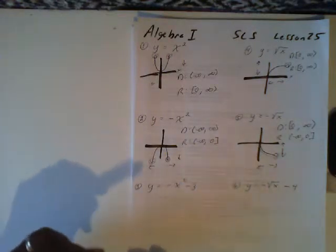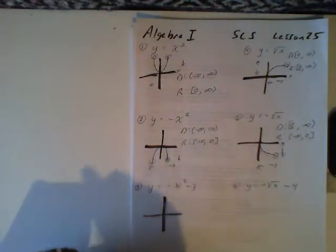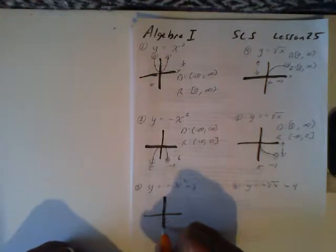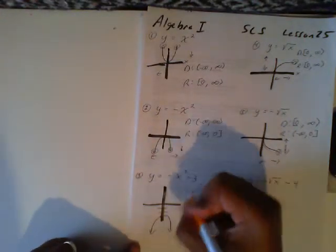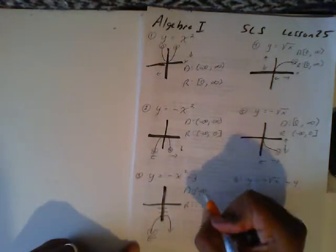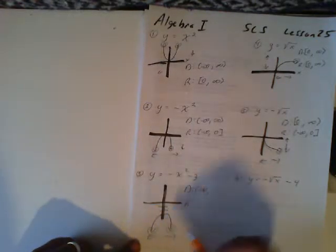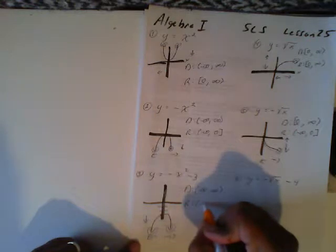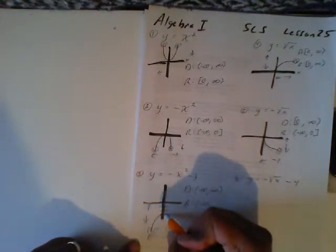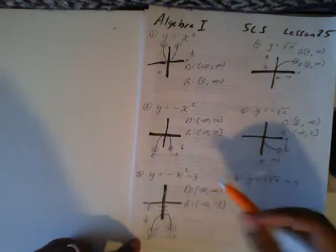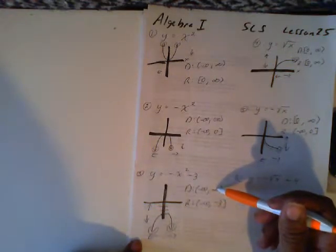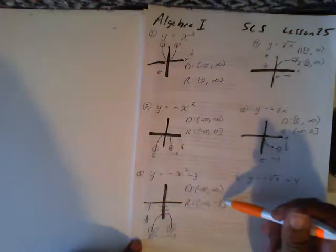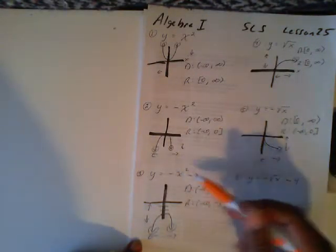Now let's look at negative x squared with a D parameter of negative 3. That means this graph is going to shift down 3. So we take this function and lower it 3 times — 1, 2, 3 — and draw the graph. For domain, going to the left, it will never stop getting wider, so that's negative infinity. To the right it never stops either, so positive infinity. For range, this graph will never stop going lower, so that's negative infinity. The highest this graph will go is negative 3. So this equation can take any real number as input — all real numbers — but the answers will only go as high as negative 3.